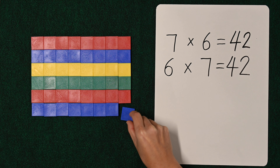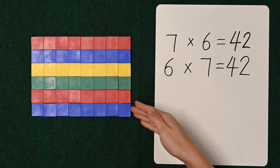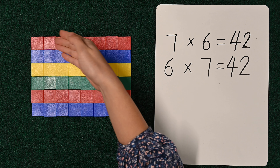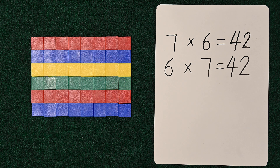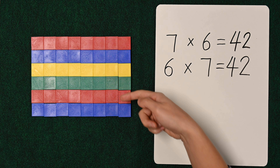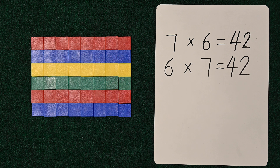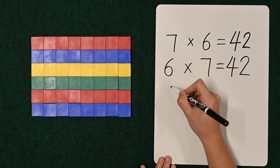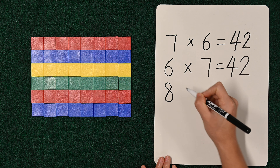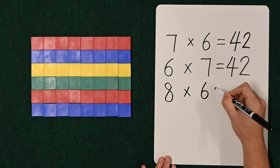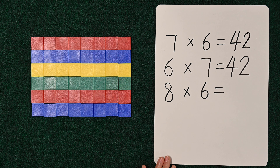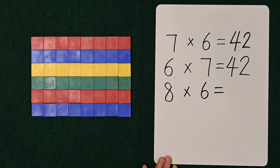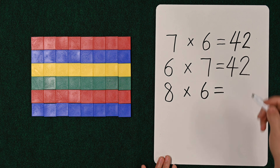And so now we have eight columns — one, two, three, four, five, six, seven, eight columns and six rows. One, two, three, four, five, six rows. So let's write that down as eight times six, which is the same as six times eight. And that's equal to — I remember to remember — eight sixes are forty-eight.